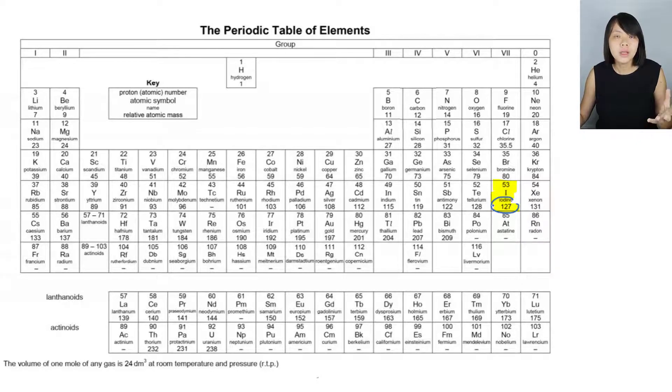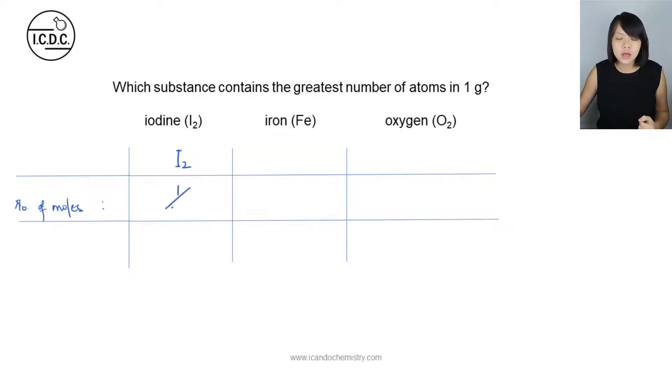Now the relative atomic mass of one iodine atom is 127. For I2, it will be 127 multiplied by 2, which is 254. So the number of moles of iodine will be the mass divided by the molar mass, which is 254.